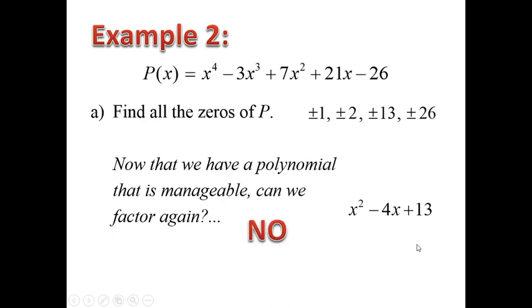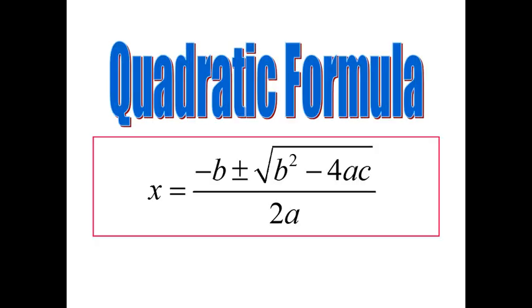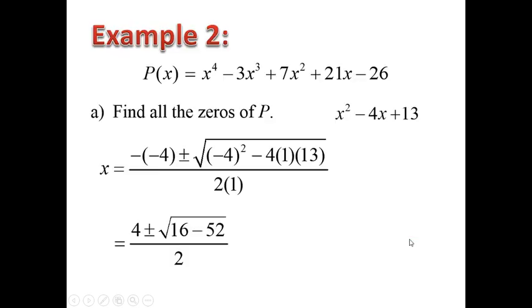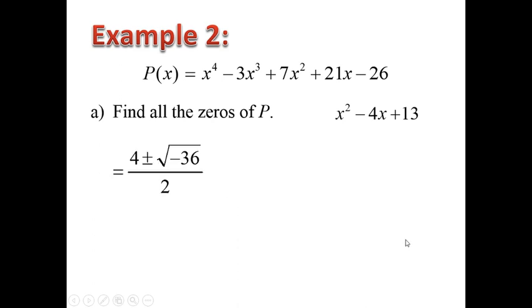Is x squared minus 4x plus 13 factorable? No, because 13 is a prime. So we use the quadratic formula: x equals negative b plus or minus the square root of b squared minus 4ac, all over 2a. Plugging in the numbers, we get 4 plus or minus the square root of negative 36, over 2. Simplifying, we get 4 plus or minus 6i over 2, which reduces to 2 plus or minus 3i.